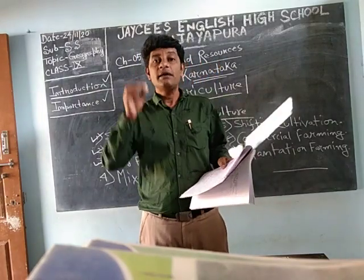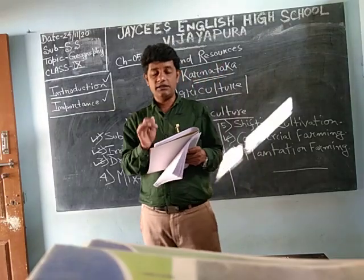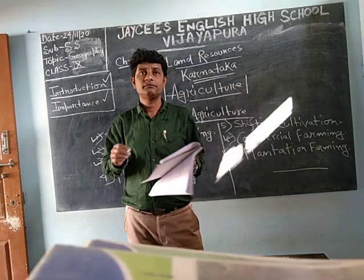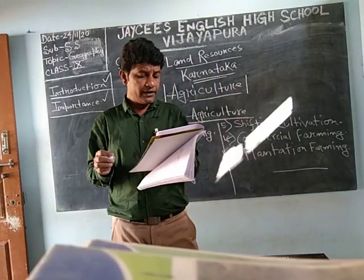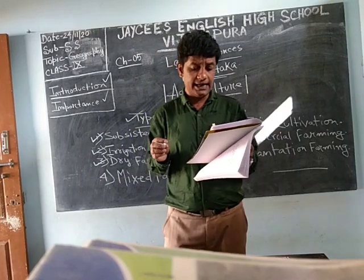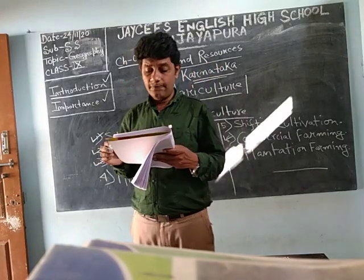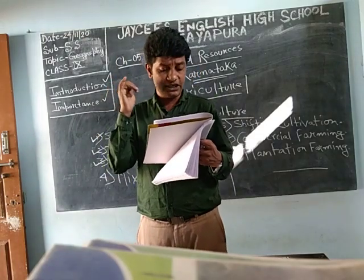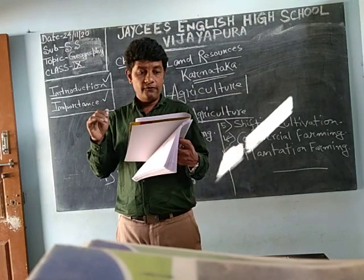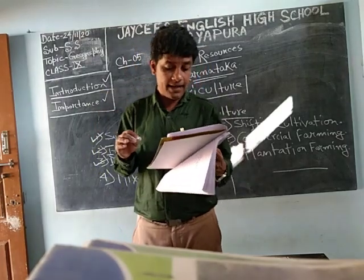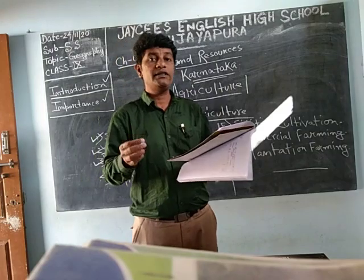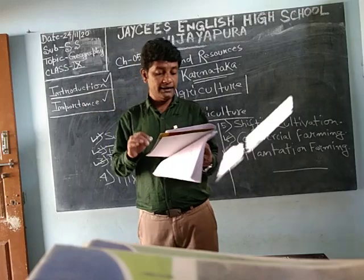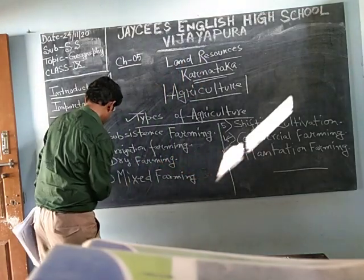Nowadays, mixed type of farming is gaining popularity. In addition to crops, dairy farming, silkworm rearing, sheep rearing, poultry, beekeeping, and fishery are also taken up together. Where crops and all these other activities are combined, that is known as mixed farming.